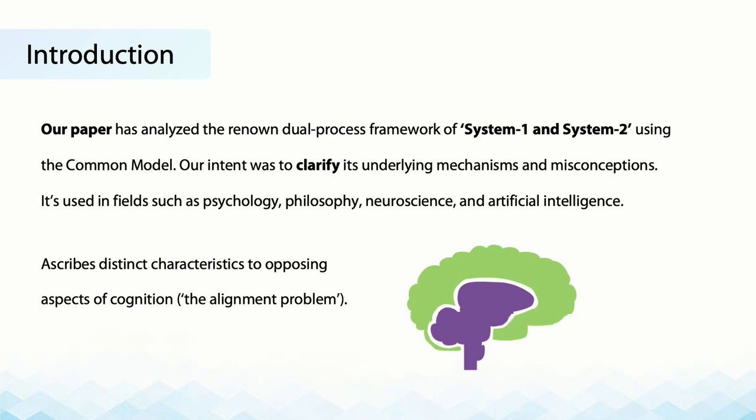Our paper has analyzed the renowned dual process framework of System 1 and System 2 using the Common Model. Our intent was to clarify its underlying mechanisms and misconceptions. This framework is used in various fields increasingly, such as psychology, philosophy, neuroscience, and artificial intelligence. It ascribes distinct characteristics to opposing aspects of cognition — this is also called the alignment problem.